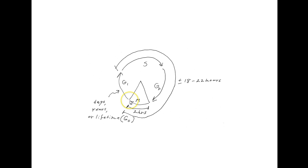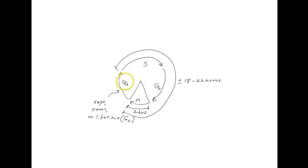In terms of time, after the cell has just divided, it goes into G1. A cell can sit in G1 for days, years, or even your entire lifetime. For example, neurons and skeletal muscle cells do not divide again — they sit there for the rest of your life without dividing, and those cells are said to be in the G0 stage. Cells in skin or epithelial tissues lining the digestive tract may sit in G1 for days; liver cells for years. When the right signal comes, the cell moves from G1 into S phase.